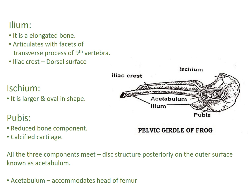Ilium is followed by Ischium, which forms the next bone component of the Pelvic Girdle. Ischium extends towards the posterior end and is large and oval in shape, followed by Pubis. Pubis is highly reduced and is made up of calcified cartilage. All 3 bone components meet to form a disc structure posteriorly on the outer surface, known as Acetabulum. You can see in the diagram the presence of Acetabulum on the outer surface, formed by the union of all 3 bone components, where the head of the femur bone fits and articulates.